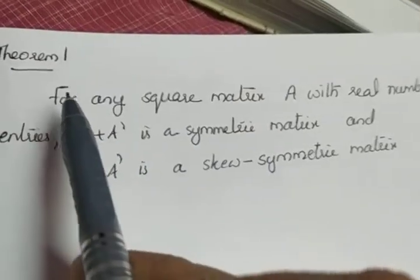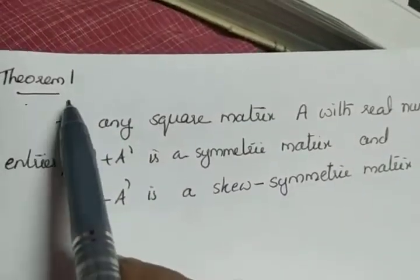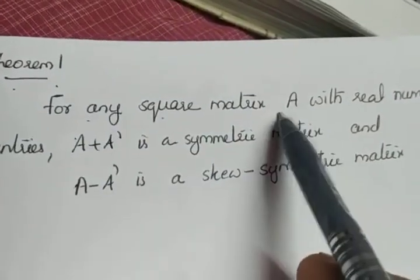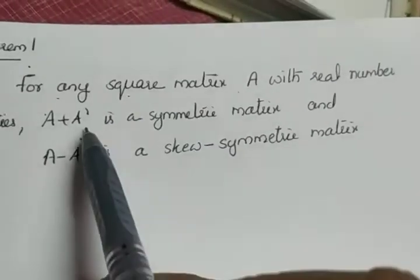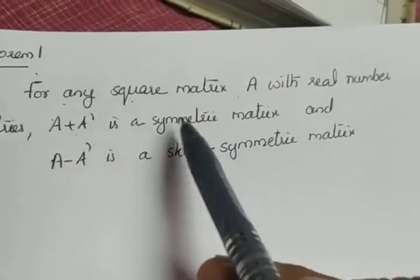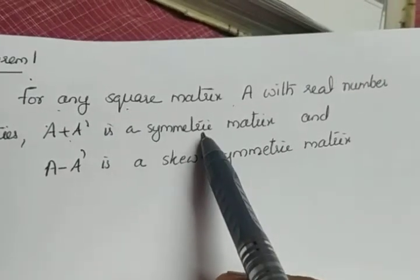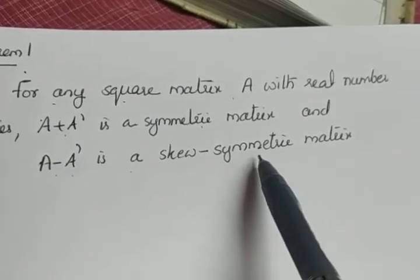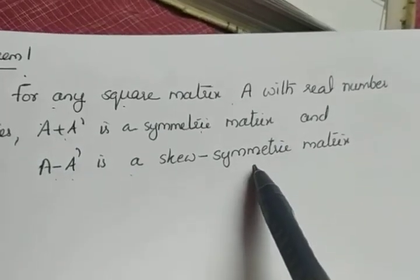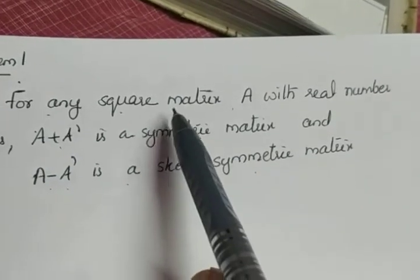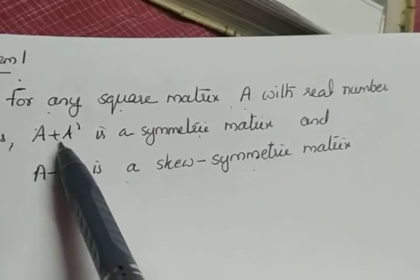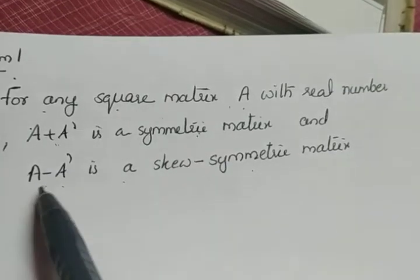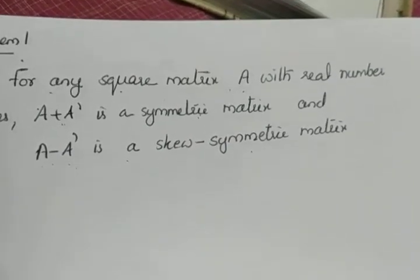Next we have Theorem 1. For any square matrix A with real number entries, A plus A transpose is a symmetric matrix and A minus A transpose is a skew-symmetric matrix. So, for any square matrix A, A plus A transpose is symmetric and A minus A transpose is skew-symmetric.